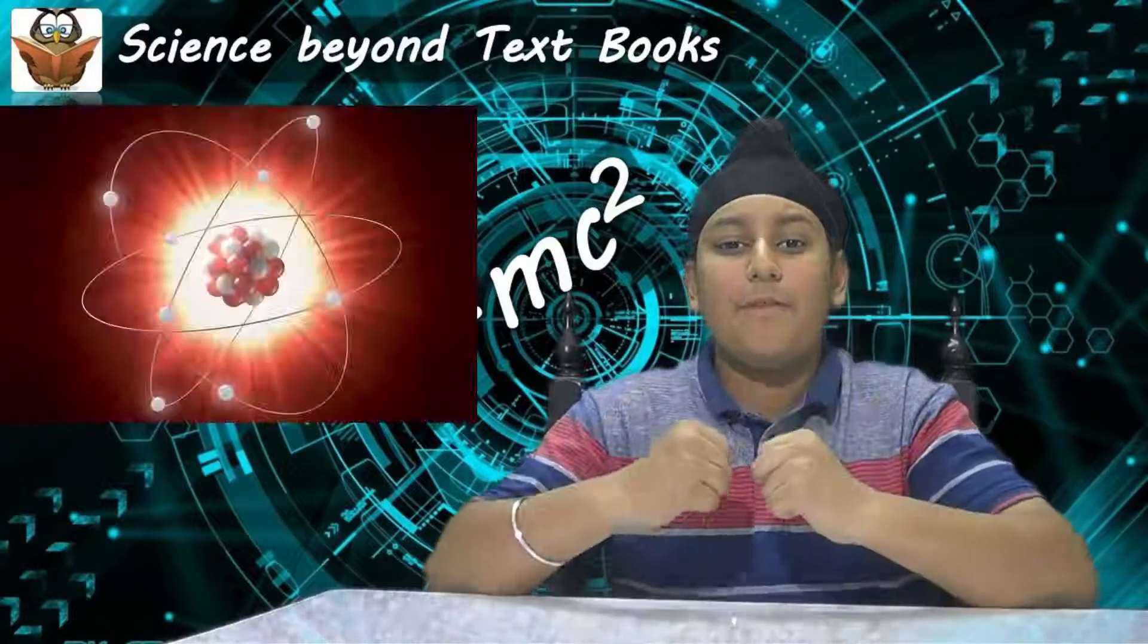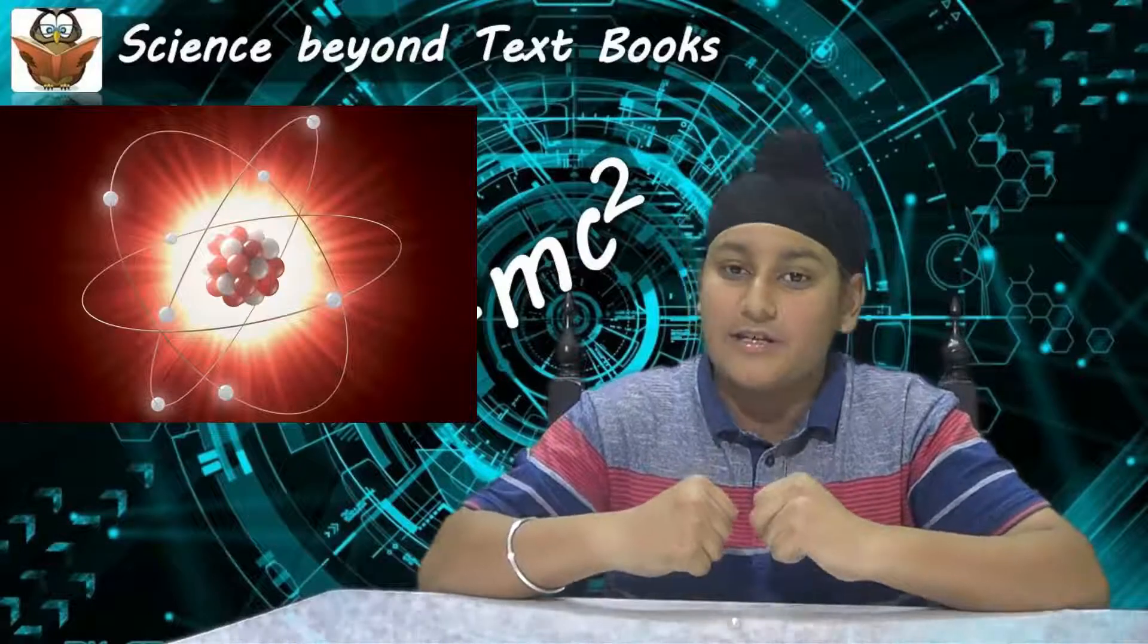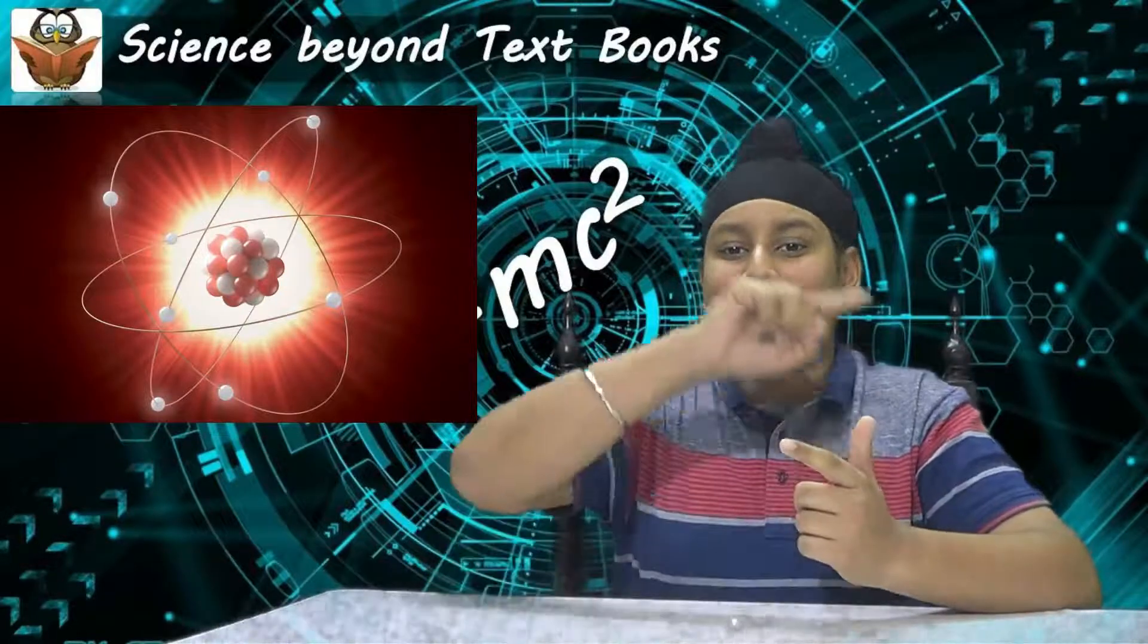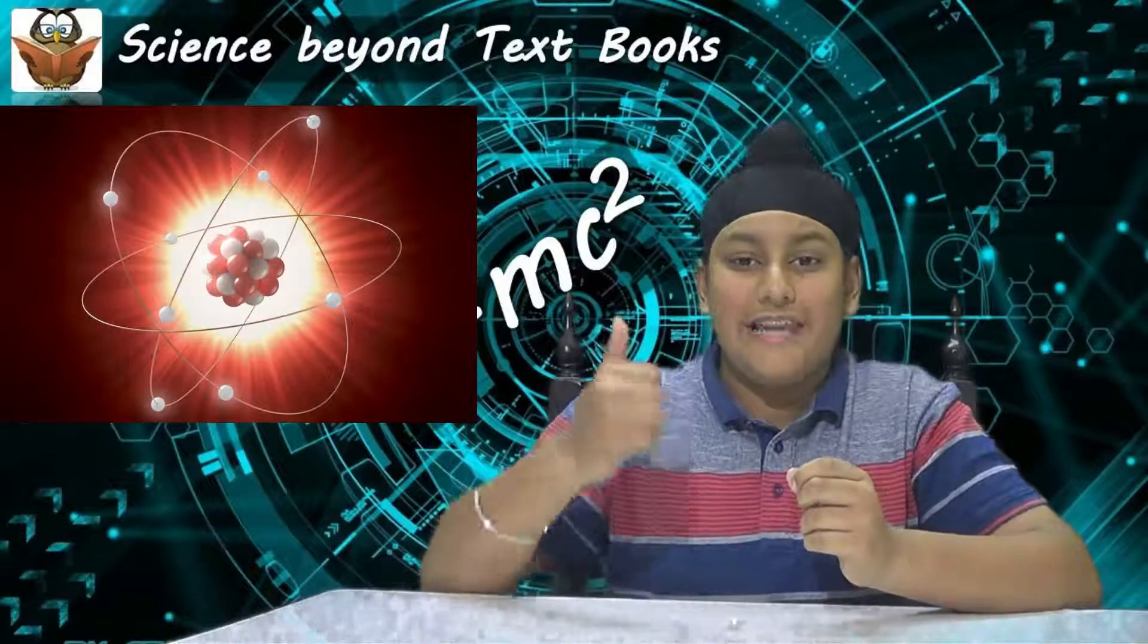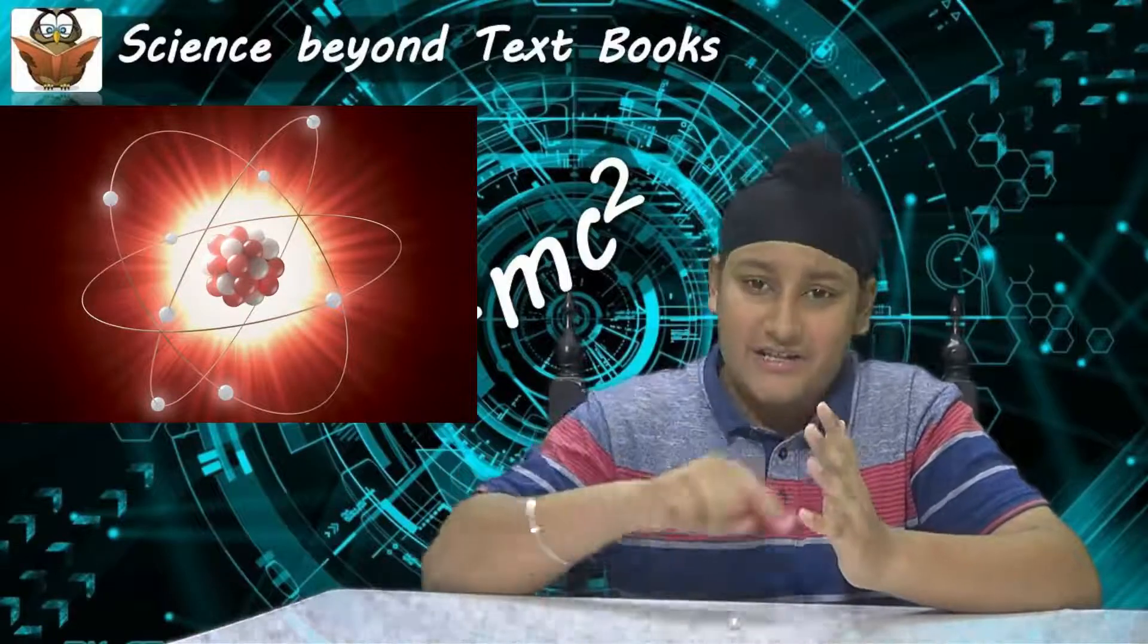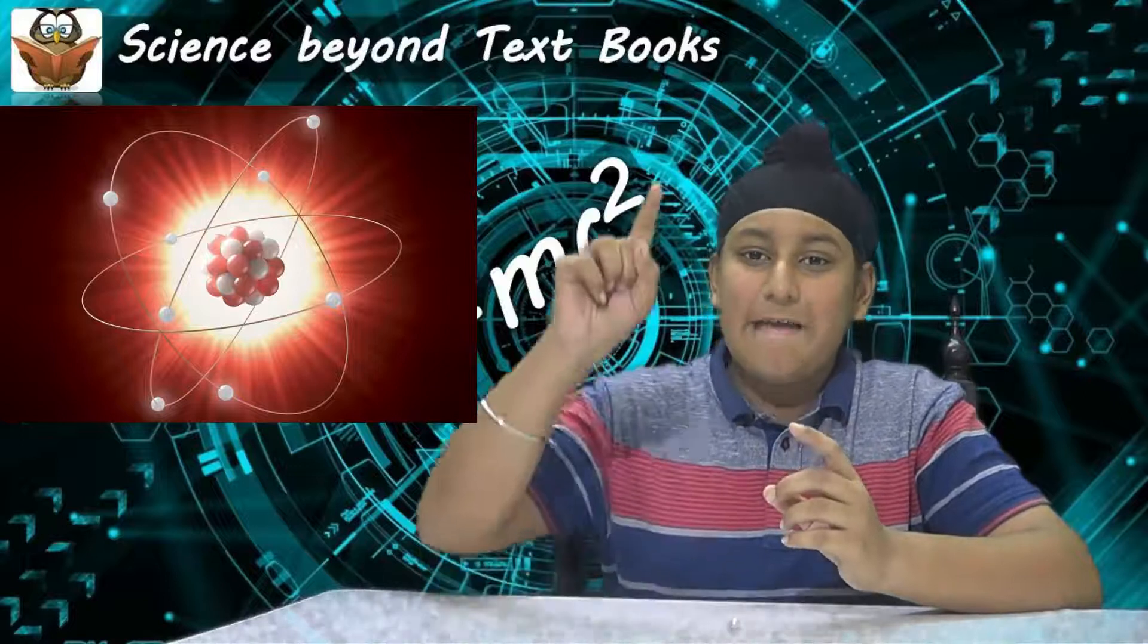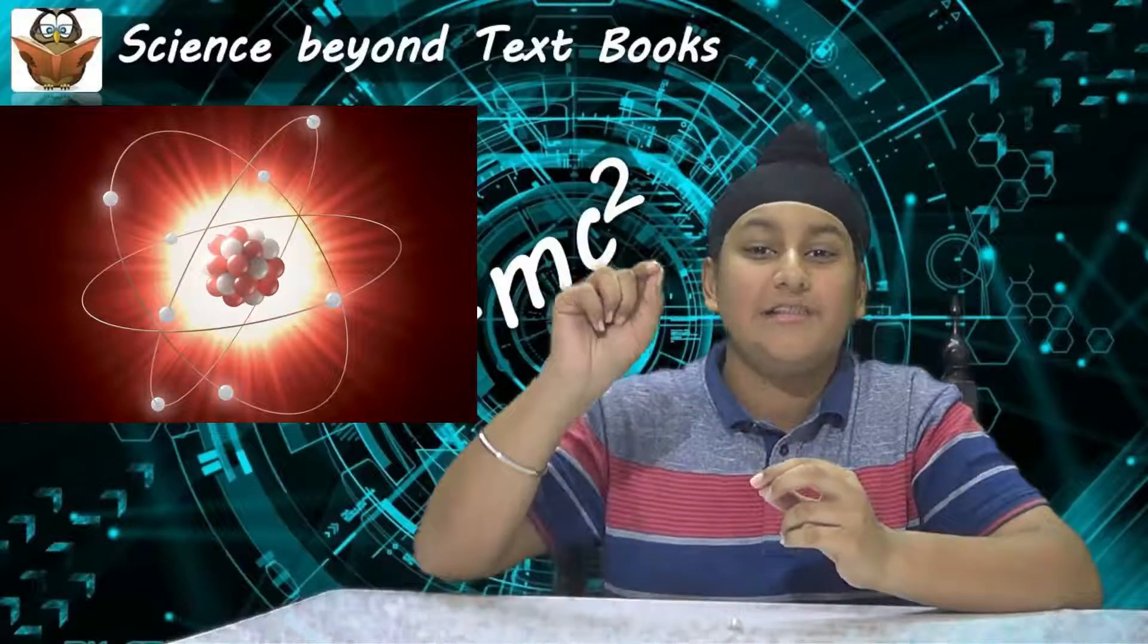So, now when we come back to an atom, an atom consists of a nucleus and electrons revolve around it. So, now the electrons revolve so fast that they become like the three blades of the fan.